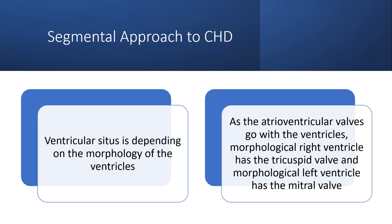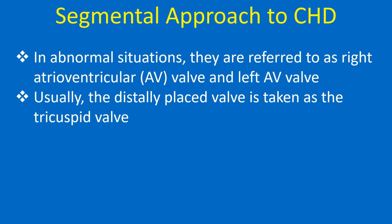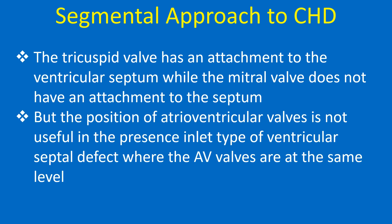Ventricular situs depends on the morphology of the ventricles. As the atrioventricular valves go with the ventricles, the morphological right ventricle has the tricuspid valve and the morphological left ventricle has the mitral valve. In abnormal situations, they are referred to as right AV valve and left AV valve. Usually the distally placed valve is taken as the tricuspid valve. Tricuspid valve has an attachment to the ventricular septum while the mitral valve does not. However, the position of AV valves is not useful in the presence of inlet type of ventricular septum defect where the AV valves are at the same level.